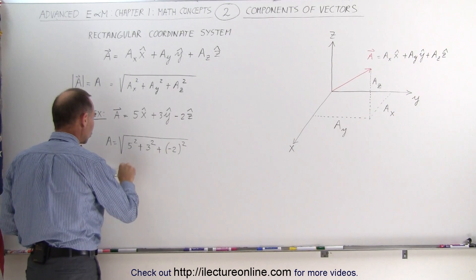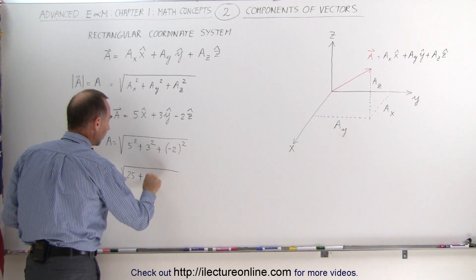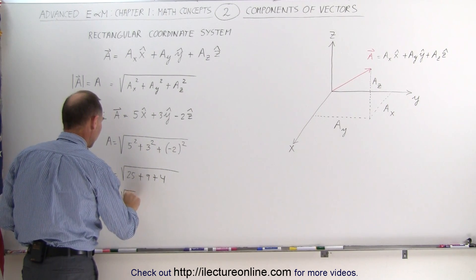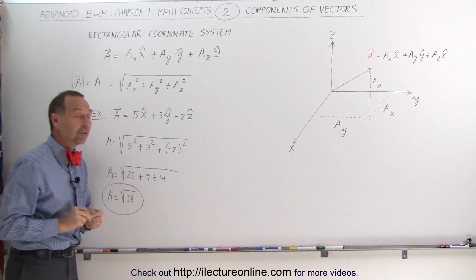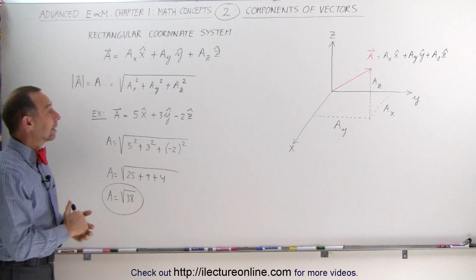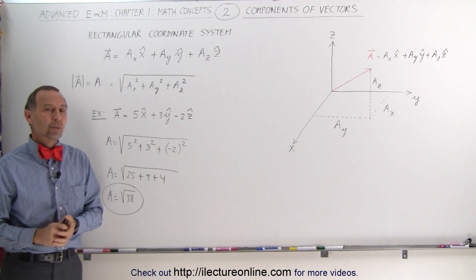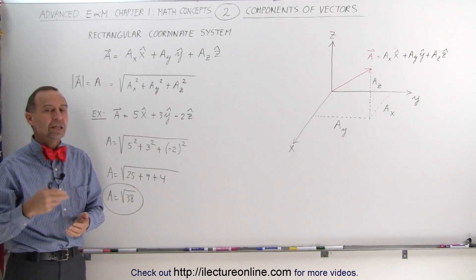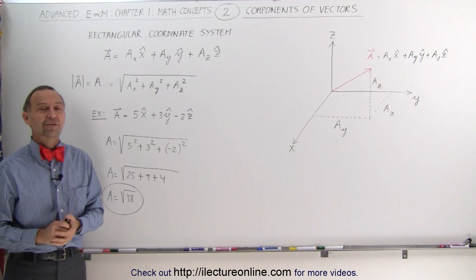So a then becomes equal to the square root of 25 plus 9 plus 4, or a is equal to the square root of 38. That would be the magnitude of your vector, and that's how it's found by simply taking each of the components, squaring them, and adding them together. That's the concept of the components of a vector. We'll learn more in the next video about the direction of those components and the cosine directions as well. So stay tuned and we'll get on to the next video.